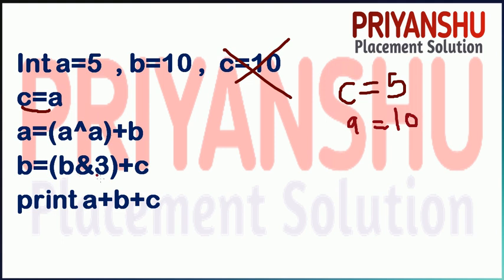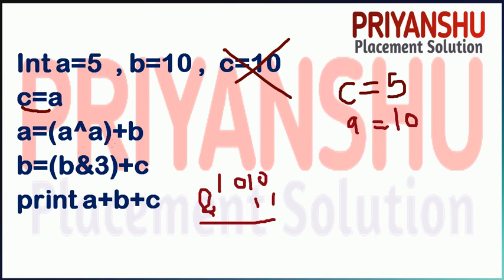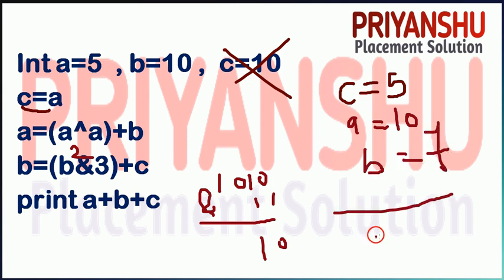Now b equals b AND c. b is 10 (binary: 1010) and c is now 5 (binary: 0101 — wait, let me recalculate). Performing AND: 10 AND 3 in binary gives 0010, which is 2. So 2 plus 3 equals 7 — wait, adjusting: the value of b becomes 7. Then print the result — the output is 22.